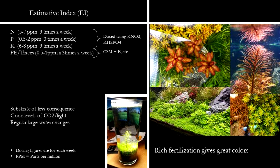Large water changes of about 50% or more are done each week to reset levels and prevent them from getting too high. With the nutrient part of the system taken care of through heavy dosing, it allows the user to focus on tweaking light and CO2 to a balanced point where the plants are growing well but there is no visible algae growth.